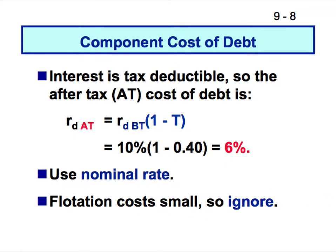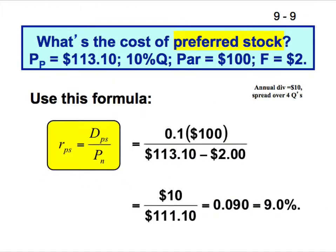At this point we are ignoring flotation costs. Flotation costs are basically a commission — if you approach Goldman Sachs to raise $500 million of debt for you, they're not going to do it for free. They're going to charge you something, which makes the equation a little more complex. We'll deal with it later in the chapter. Since you're graduate students, we're going to do that too.